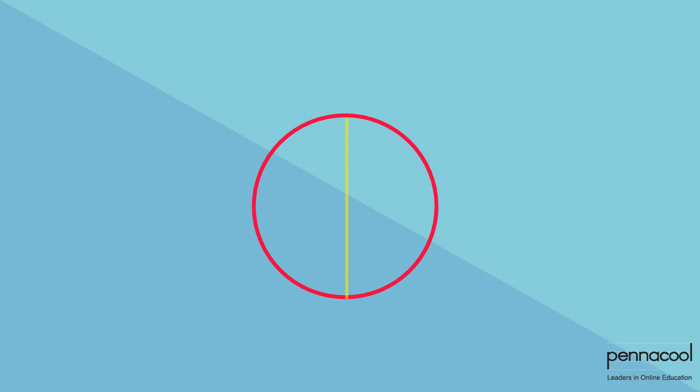Can we find the number of symmetry lines in the letter O? The letter O is a perfect circle that has infinite lines of symmetry.